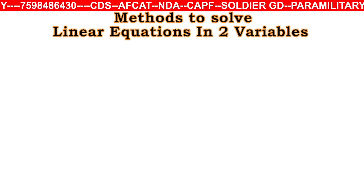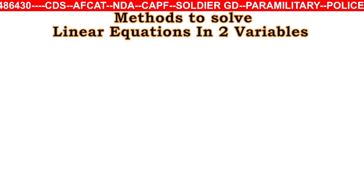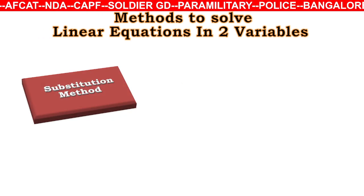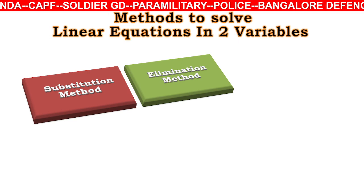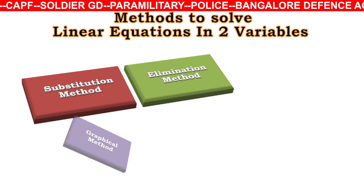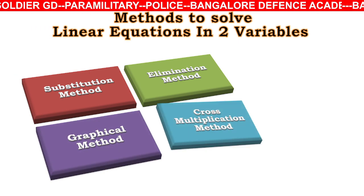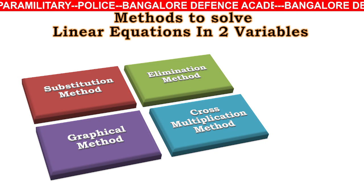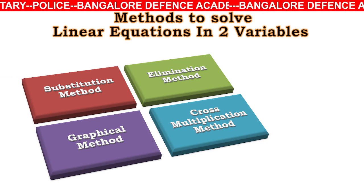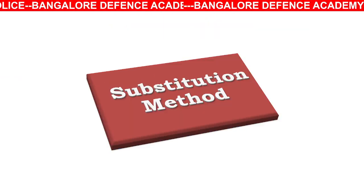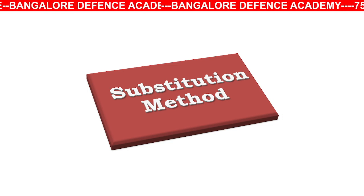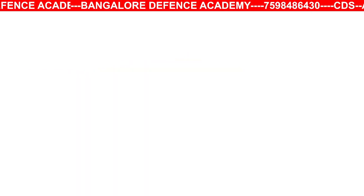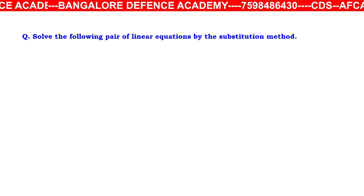Methods to solve linear equations in two variables — to find the values of x and y — include: the substitution method, elimination method, graphical method, and cross multiplication method. Let us understand each method in detail.